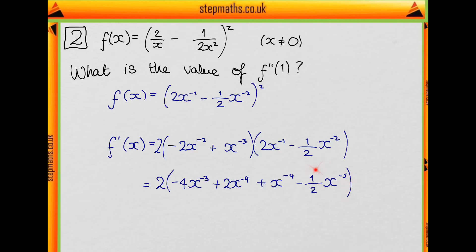For example, this term here comes from x to the minus 3 times minus 1 half x to the minus 2. We do minus 3 minus another 2, which is minus 5.